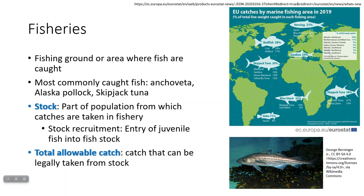Before you can understand fishing, you need to know where fishing happens. A fishery is an area where fish are caught, and a fish stock is the population or part of the population you're taking fish from. The most commonly caught species currently are anchoveta, Alaskan pollock, and skipjack tuna. Different species are found in different regions — skipjack tuna and yellowfin tuna in the Indian Ocean, redfish and cod in the North Atlantic, and herring further north.